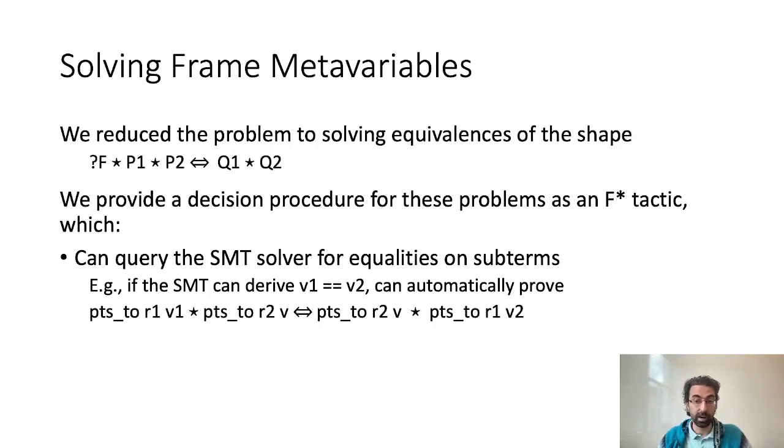Importantly, this decision procedure can cooperate with the SMT solver by querying the solver to determine equalities on subterms, leading to AC unification modulo theories. For instance, in this simple example, the AC unifier can pass the equality V1 equals V2 to the solver and conclude that the two terms are equivalent if the solver determines that the equality holds. Lastly, our decision procedure is partial, but in exchange it does not require any backtracking. Since we are inside an interactive proof assistant, the user can always help frame inference by providing annotations. As such, our tactic sacrifices completeness for speed and user interaction, enabling practical automation for separation logic reasoning. We provide the full details of the decision procedure in our paper, including a proof of termination and a proof that the scheduling we presented always exists for STEEL programs.